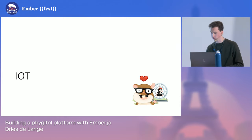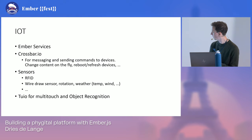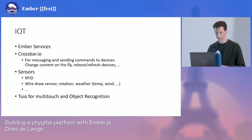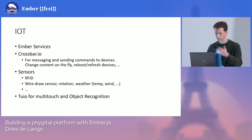At Ocular, we love combining hardware and software. So it's fun when we can make use of IoT devices like sensors and other technologies. To make good use of this, we created several services, like the Crossbar service. This technology is used for messaging and sending commands to our devices, so we can change content on the fly with a push of the button — we can change contents, reboot them, refresh them, and so on. There are a lot of sensors like the RFID bracelet you saw earlier, the wire draw sensor — that's the sensor we use for the mounted video screen on the wall — and rotation, weather, and so on. Another service we created is TUIO for multi-touch and our object recognition.